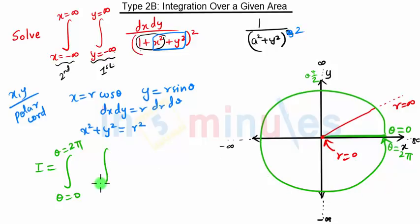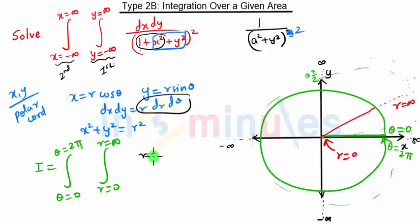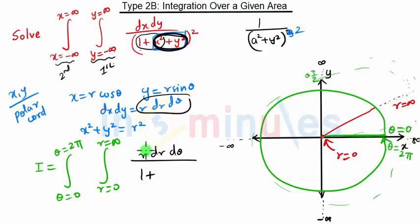The limits of our integration are: θ going from 0 to 2π, to cover the entire x-y plane, and r going from 0 to infinity. We rotate the strip from θ = 0 to θ = 2π so the entire x-y plane is covered. Then dx dy becomes r dr dθ, and (1 + x² + y²)² becomes (1 + r²)².